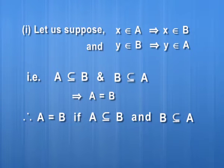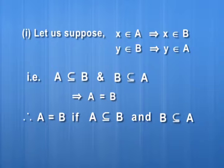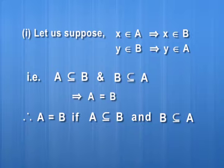Now, if x is an element of A and it implies x is an element of B, then A is contained in B. Again, if y is an element of B and it implies y is an element of A, then B is contained in A. So A is contained in B means all elements of A are in B, and B is contained in A means all elements of B are in A. That means A and B have exactly the same elements, so we can conclude that A is equal to B.